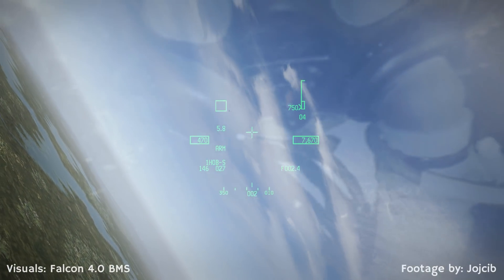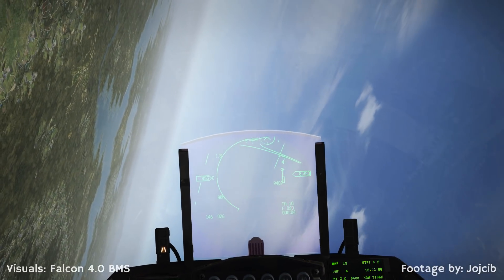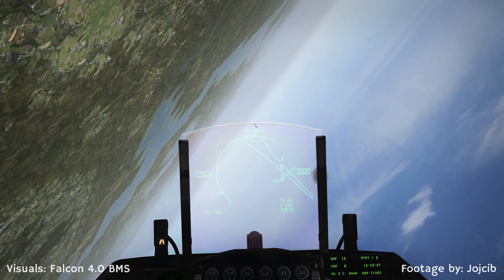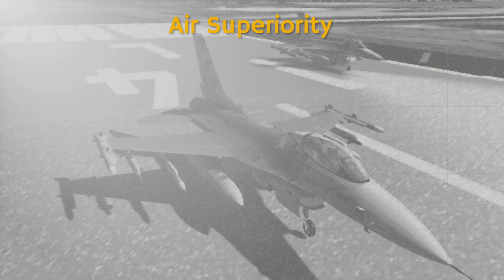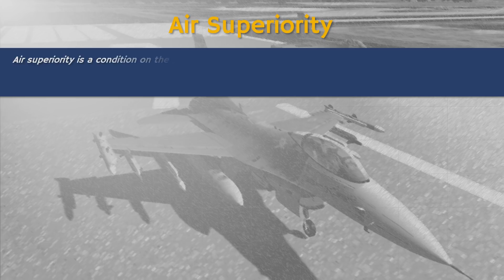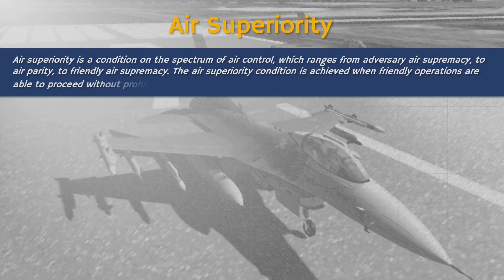So how does the United States aim to tackle this problem? Before we turn to this question, it is important to quickly go over what it wants to achieve — namely, the continuation of American air superiority. What is air superiority? As defined by the document, air superiority is a condition on the spectrum of air control which ranges from adversary air supremacy to air parity to friendly air supremacy. The air superiority condition is achieved when friendly operations are able to proceed without prohibitive interference from opposing forces.